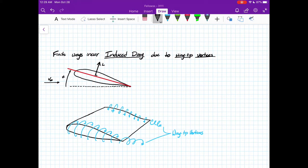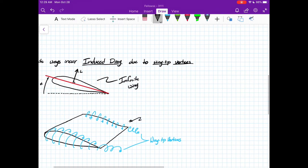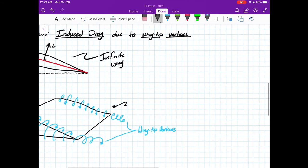I have a diagram here of what the original - this is our infinite wing where we don't have any tip effects. And then I have this lower diagram where I've drawn wing tip vortices on it.